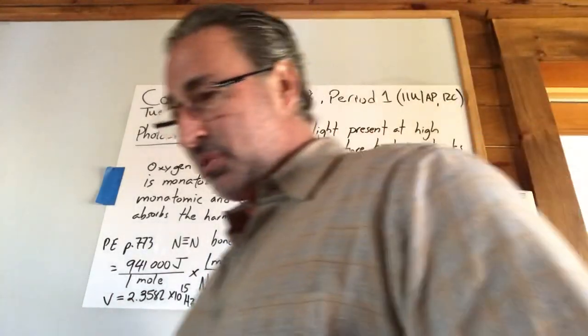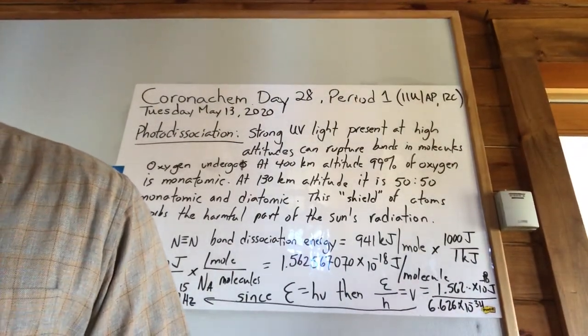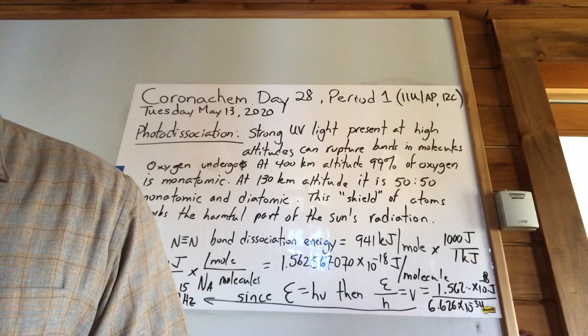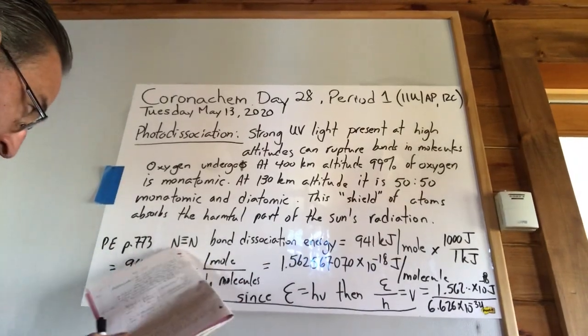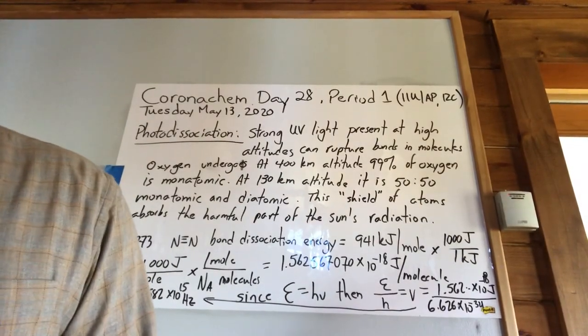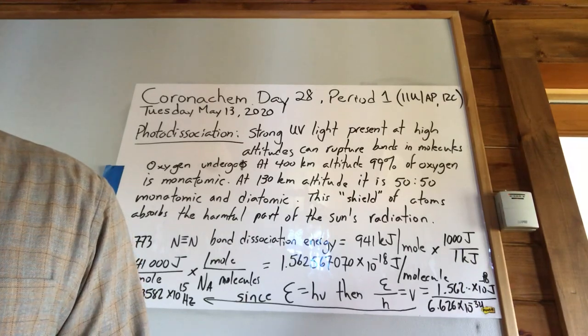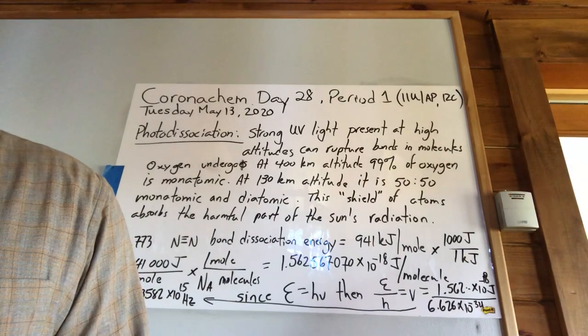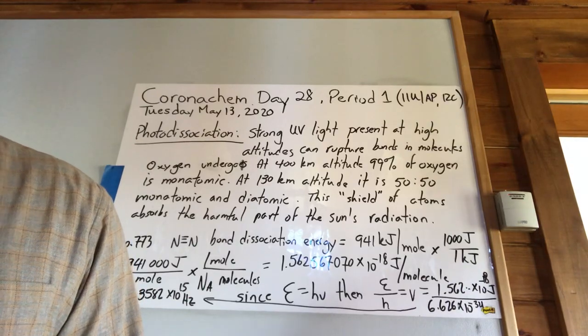On practice example page 773 of your text, it says the bond energy of nitrogen is 941 kilojoules per mole. It's a triple bond, right? Nitrogen is a triple bond. So it's a bond that's hard to break and it absorbs a lot of energy before it breaks.